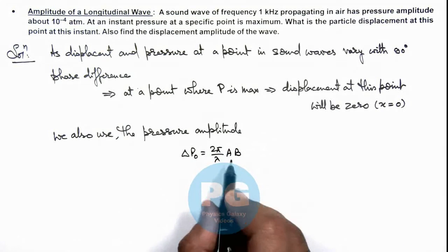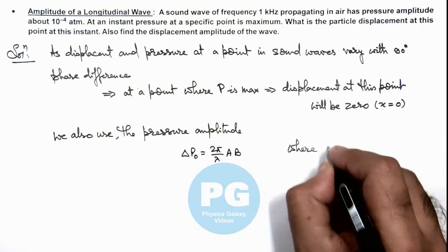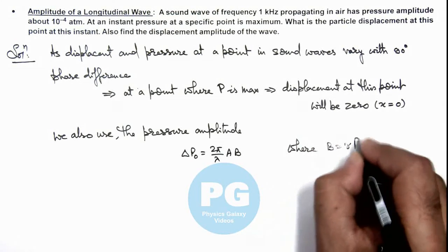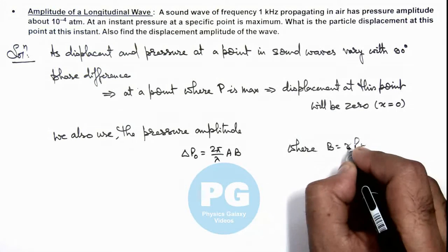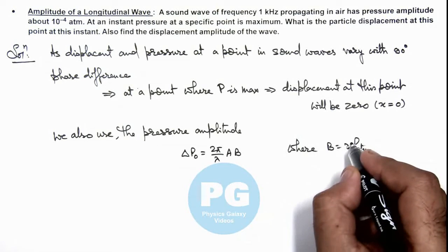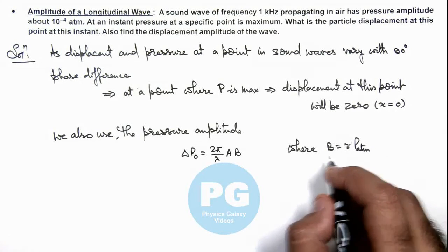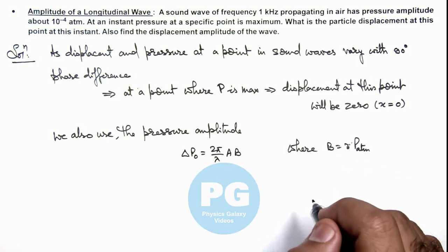Where A is the displacement amplitude and B is the bulk modulus. Where B we write as γ times p atmospheric, which we already studied in concept videos. If γ is the ratio of specific heats, in normal cases, bulk modulus of air can be taken as γ·p atmospheric.